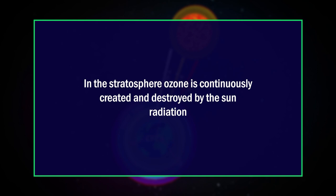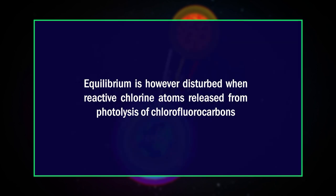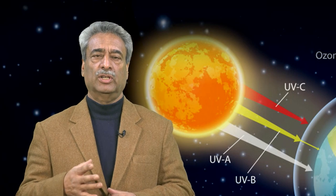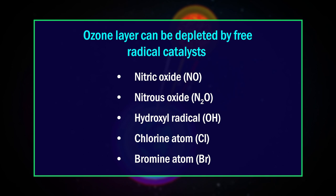Now let's talk about ozone depletion. In the stratosphere, ozone is continuously created and destroyed by solar radiation, resulting in an equilibrium in ozone concentrations. This equilibrium is disturbed when reactive chlorine atoms, released from photolysis of chlorofluorocarbons, create an imbalance by destroying ozone molecules. The ozone layer can be depleted by free radical catalysts including nitric oxide, nitrous oxide, hydroxyl radicals, chlorine atoms, and bromine atoms.